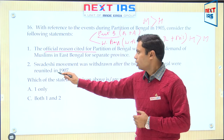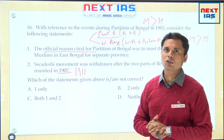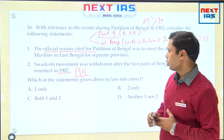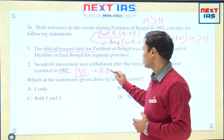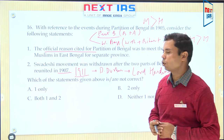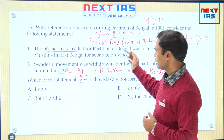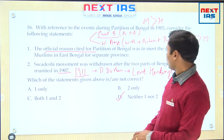Bengal was divided into East Bengal and West Bengal. East Bengal of that time comprised present-day Bangladesh plus Assam, while West Bengal comprised present-day West Bengal plus Bihar plus Jharkhand plus Odisha. The clear aim was to create a religious division — Muslims were more numerous in East Bengal, Hindus in West Bengal. The partition was ultimately annulled in 1911, not 1907, announced in the Delhi Darbar where Viceroy Lord Hardinge declared Bengal would be reunited. So neither first nor second statement is correct — answer will be D.